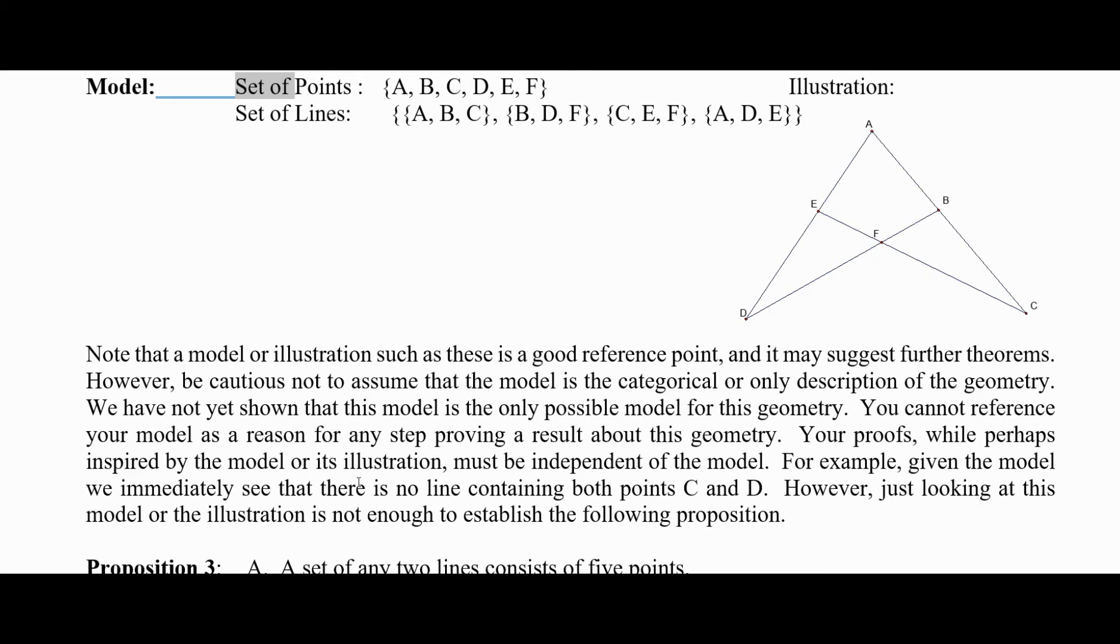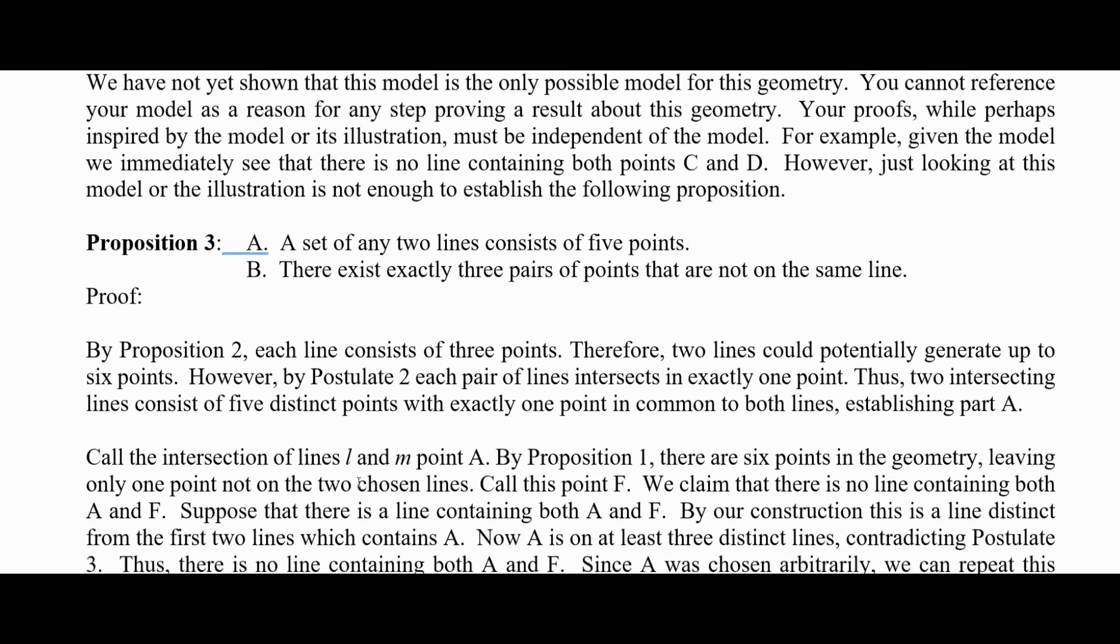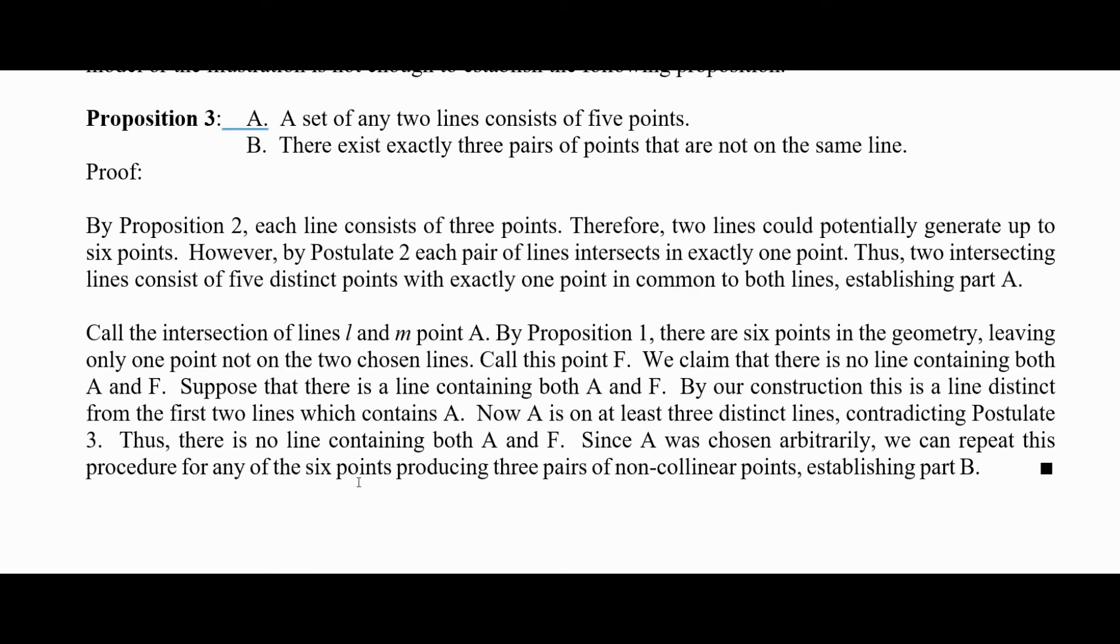Okay, so let's see if we can do something about that as a proposition. Well, it looks like we have a set of two distinct, of two lines contains five points, and there exists three pairs of points that are not on the same line. So by proposition two, each line consists of three points. Therefore, two lines could potentially generate up to six points. However, by postulate two, each pair of lines intersects in exactly one point. So two intersecting lines consist of five distinct points with exactly one point in common to both lines, and that establishes part A.